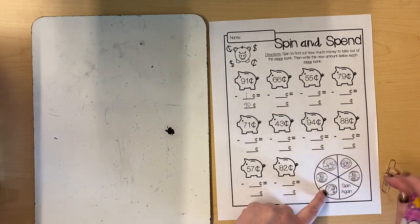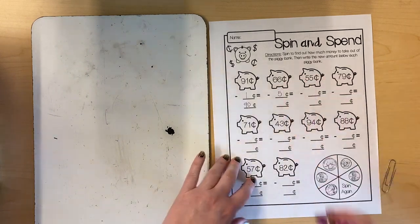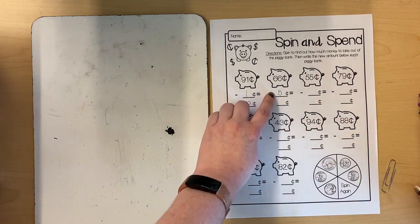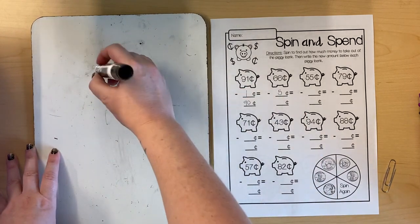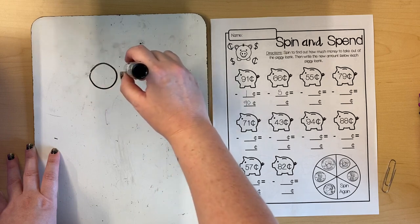I'm gonna take out a nickel. A nickel is 5 cents. So if I have 66 cents and I need to take away 5 cents, what will I have left? I'm not sure so I can solve it on my whiteboard.